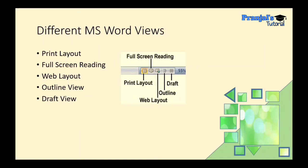Full Screen Reading view is used to read the document in full screen. Web Layout view displays the document as it would appear in a browser. Outline view shows the document contents with headings and titles only. Draft view displays the basic structure of the document. Note that in Outline view and Draft view, graphical objects are not shown — only the basic document structure is displayed.